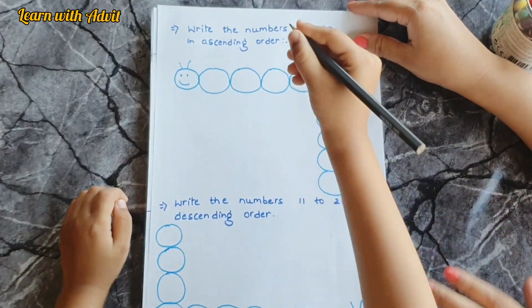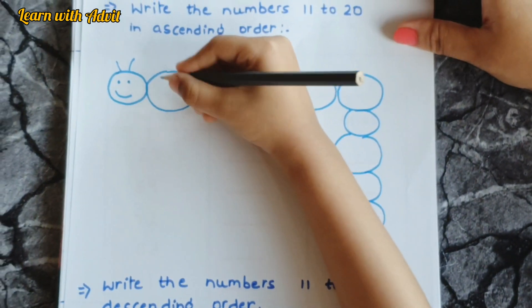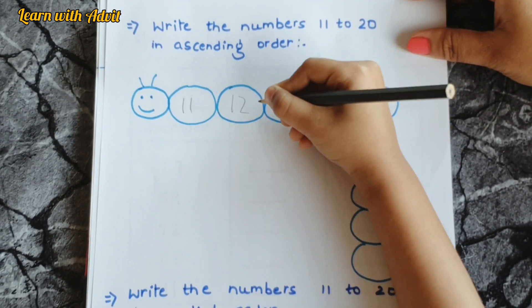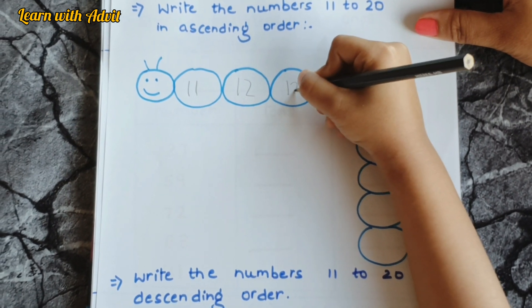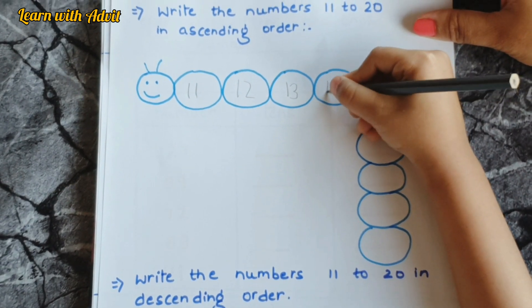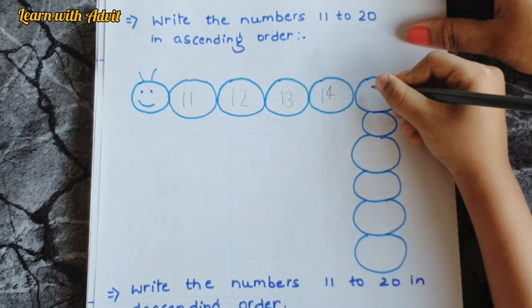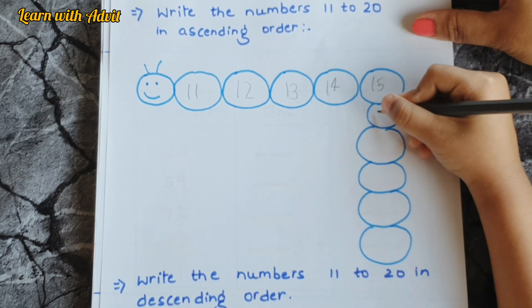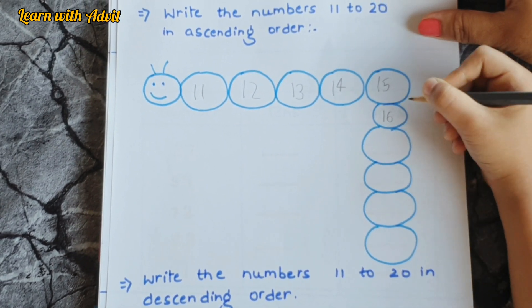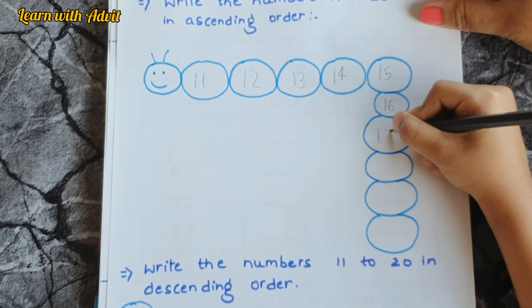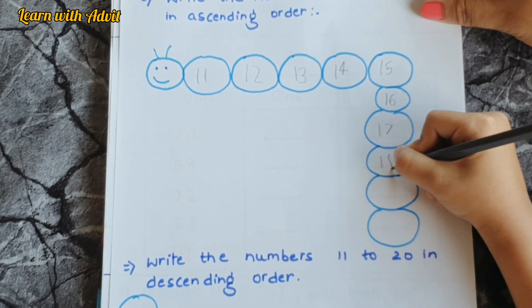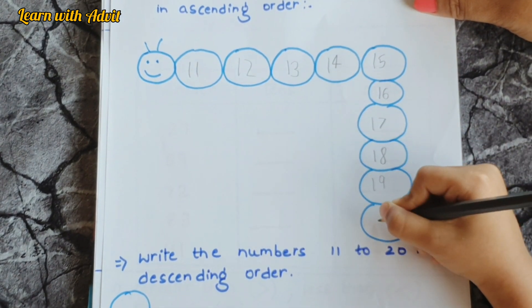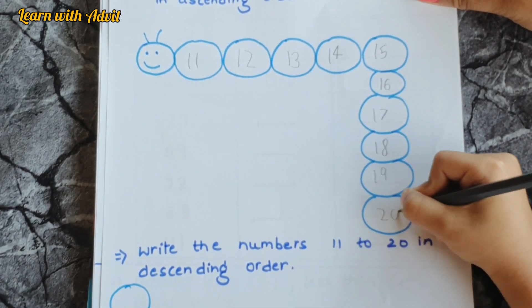Speak and write. 11, 12, 13, 14, 15, 16, 17, 18, 19, 20. Very good.